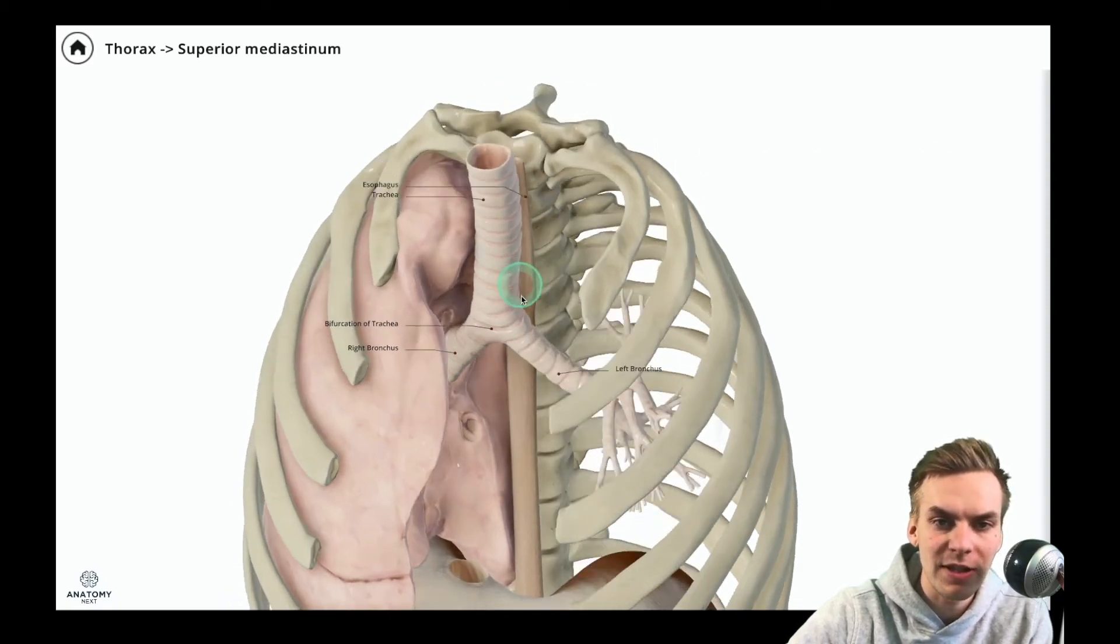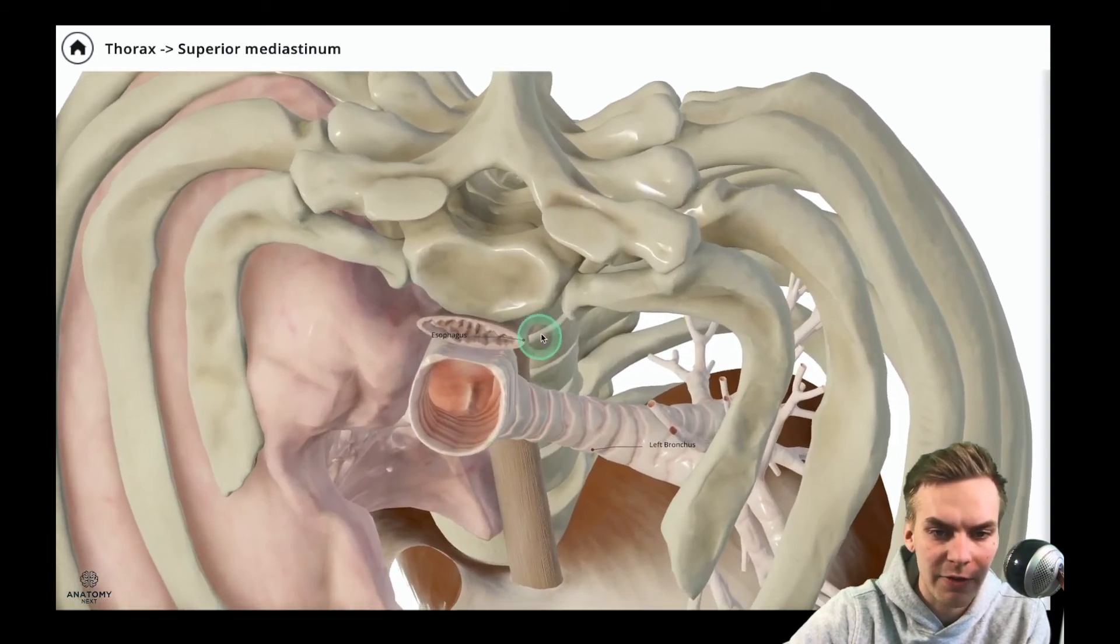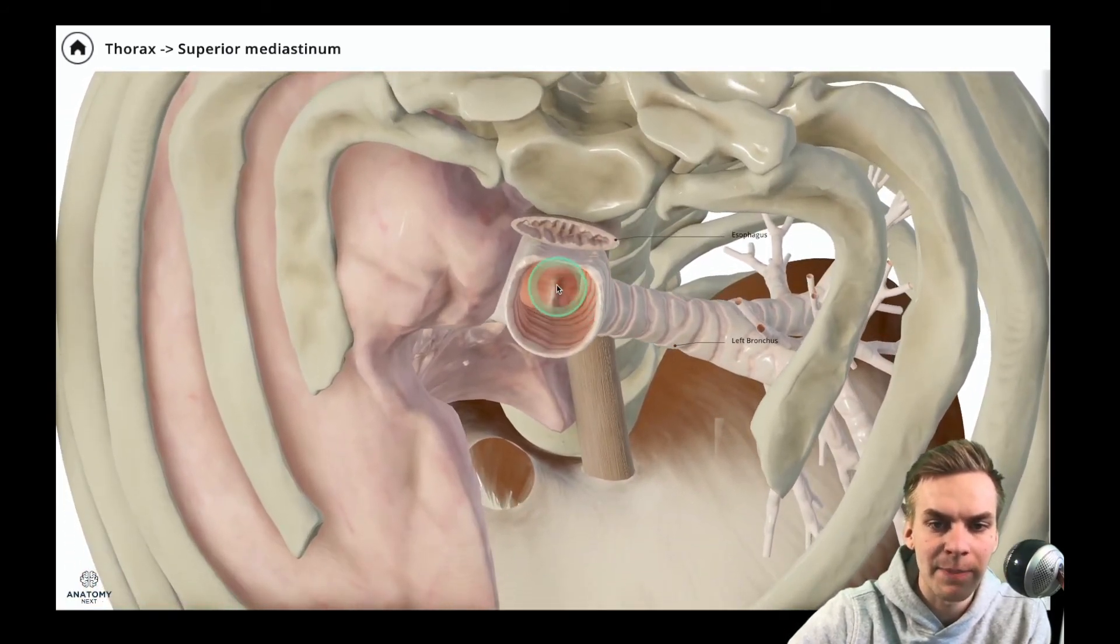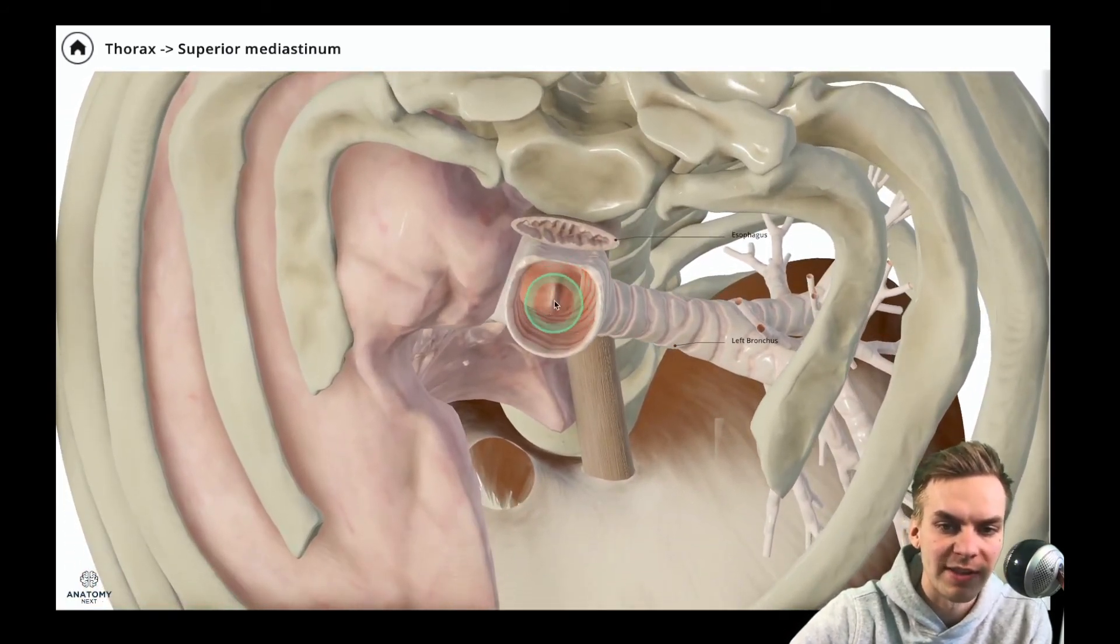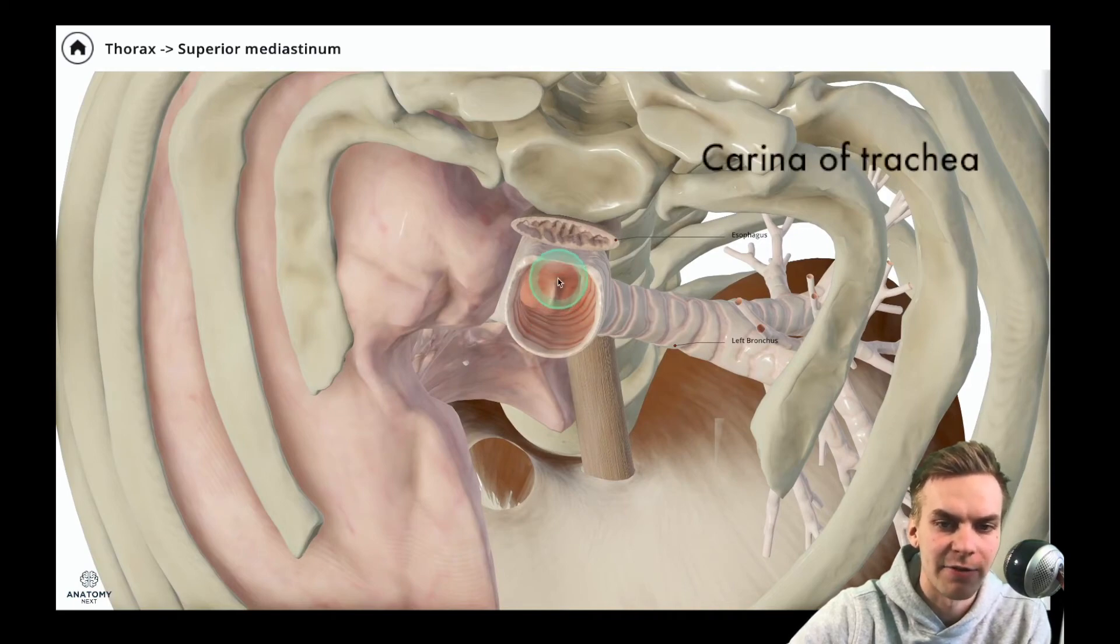And if we look inside the trachea, here from the superior aspect, we see that at the point of the bifurcation we see this little ridge and this is called the carina of the trachea.